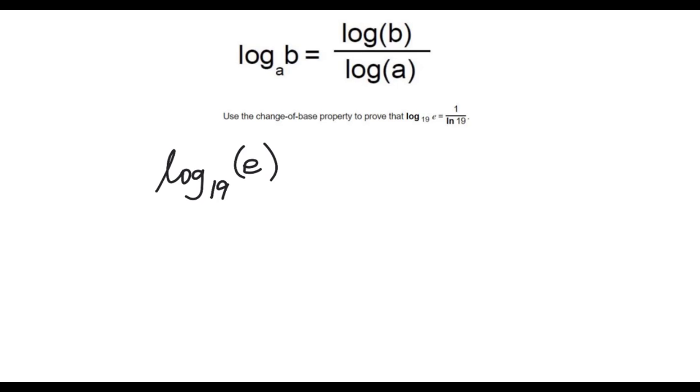If I follow along here, I can see that B is going to be E, and A is going to be 19, so I can rewrite this as log of E over log of 19.